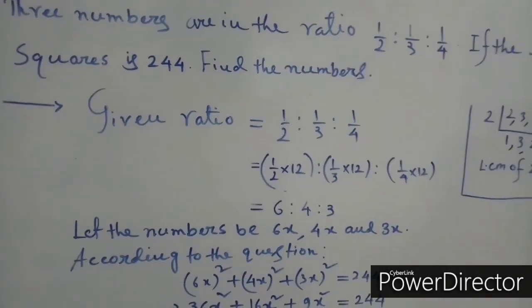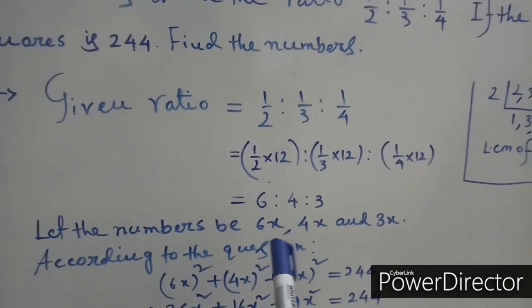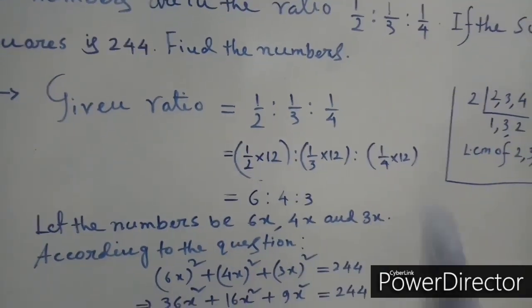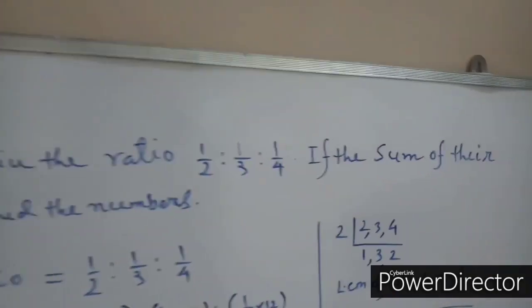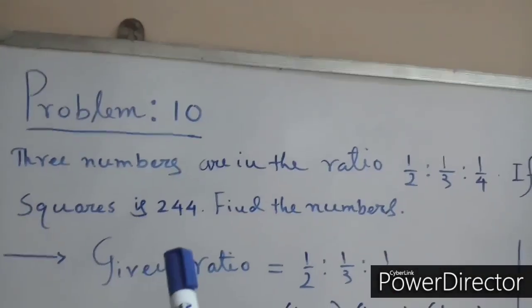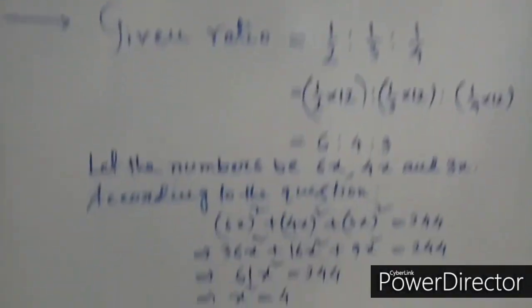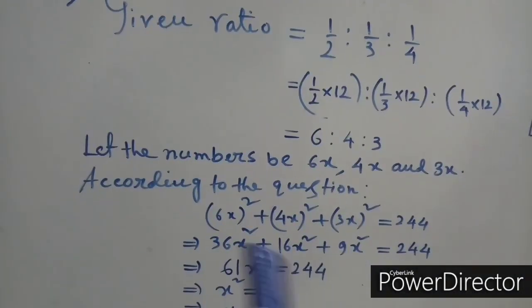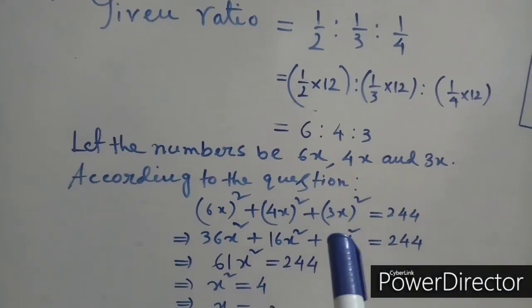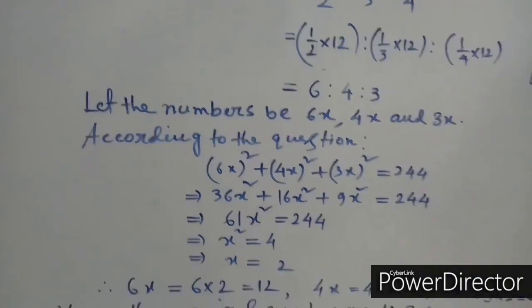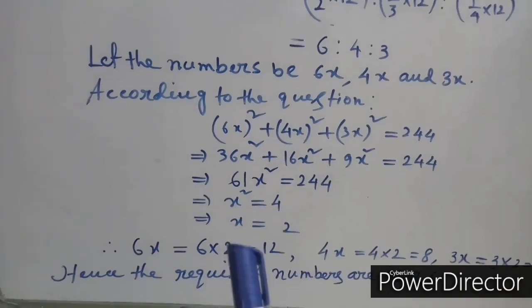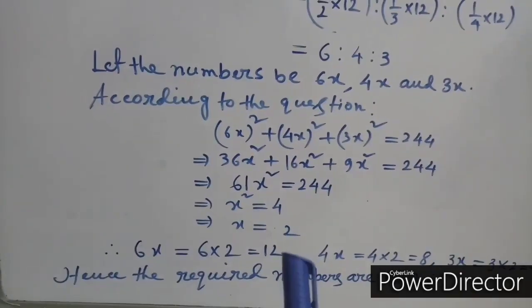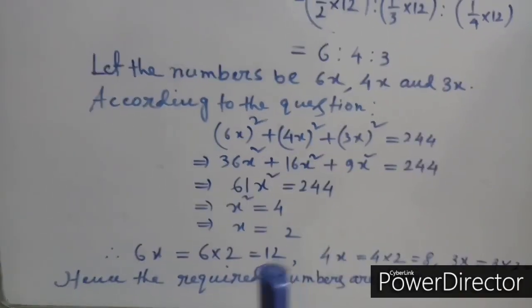Since the ratio is 6 : 4 : 3, we consider the numbers as 6x, 4x, and 3x. According to the question, the sum of their squares equals 224: (6x)² + (4x)² + (3x)² = 224. After simplification, we get x² = 4, so x = ±2. We take only the positive value, x = 2.